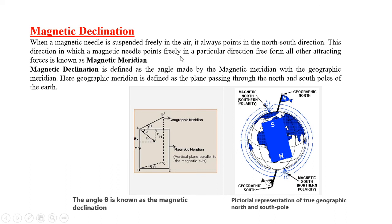Magnetic declination. When a magnetic needle is suspended freely in the air, it always points in the north-south direction. This direction in which a magnetic needle points freely in a particular direction free from other attractive forces is known as magnetic meridian. Magnetic declination is defined as the angle made by the magnetic meridian with the geographic meridian. Here, geographic meridian is defined as the plane passing through the north and south poles of the earth. From this figure, we can find the angle theta is known as magnetic declination. This is the pictorial representation of true geographic north and south pole.